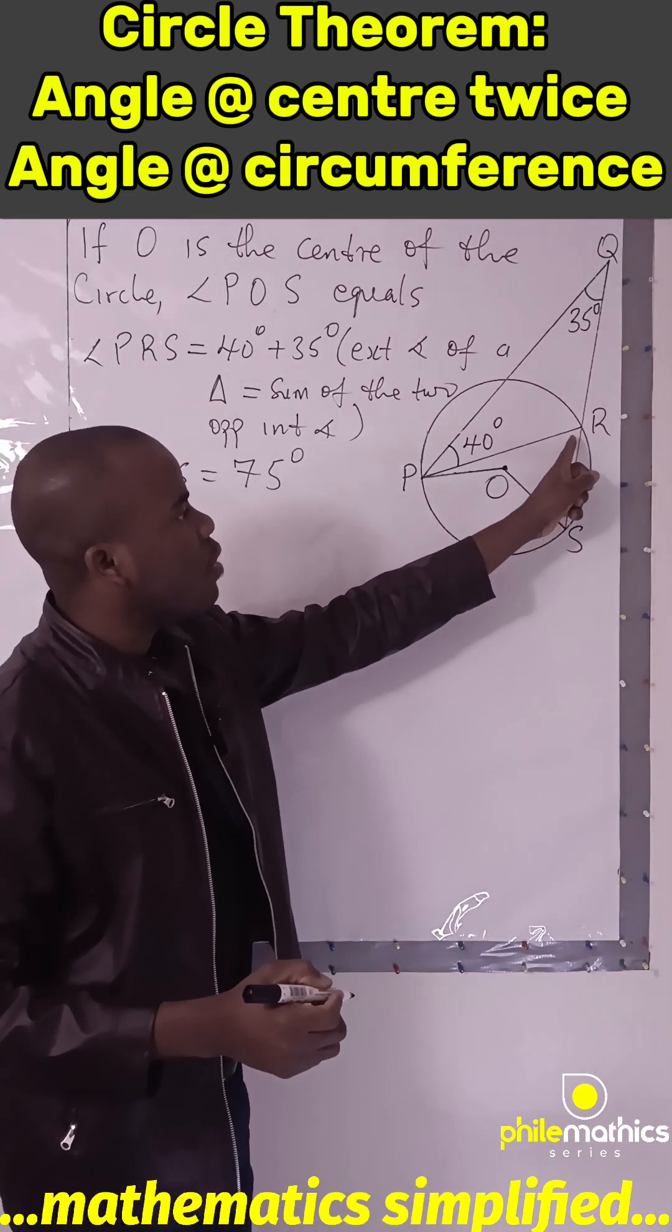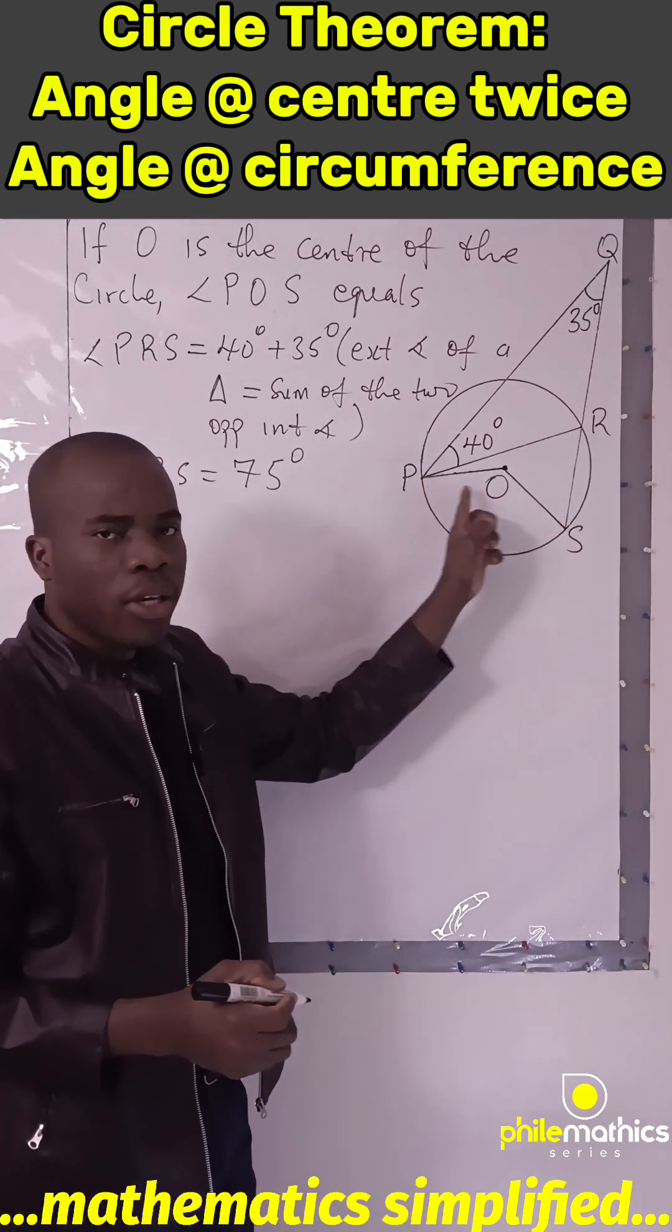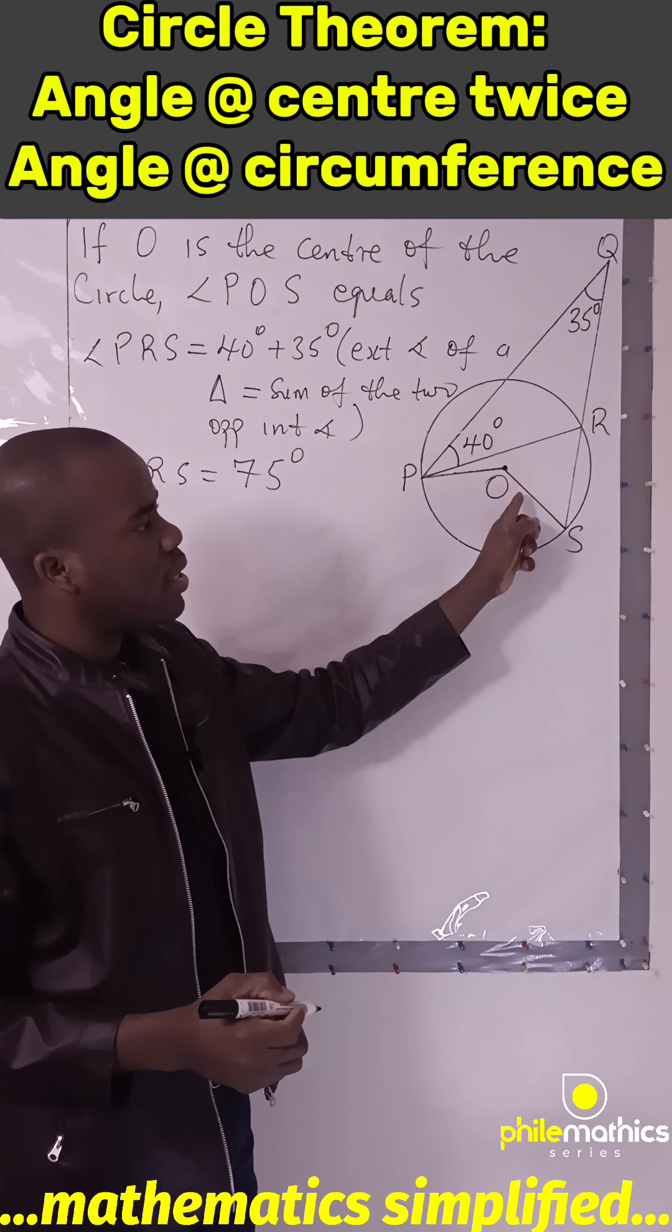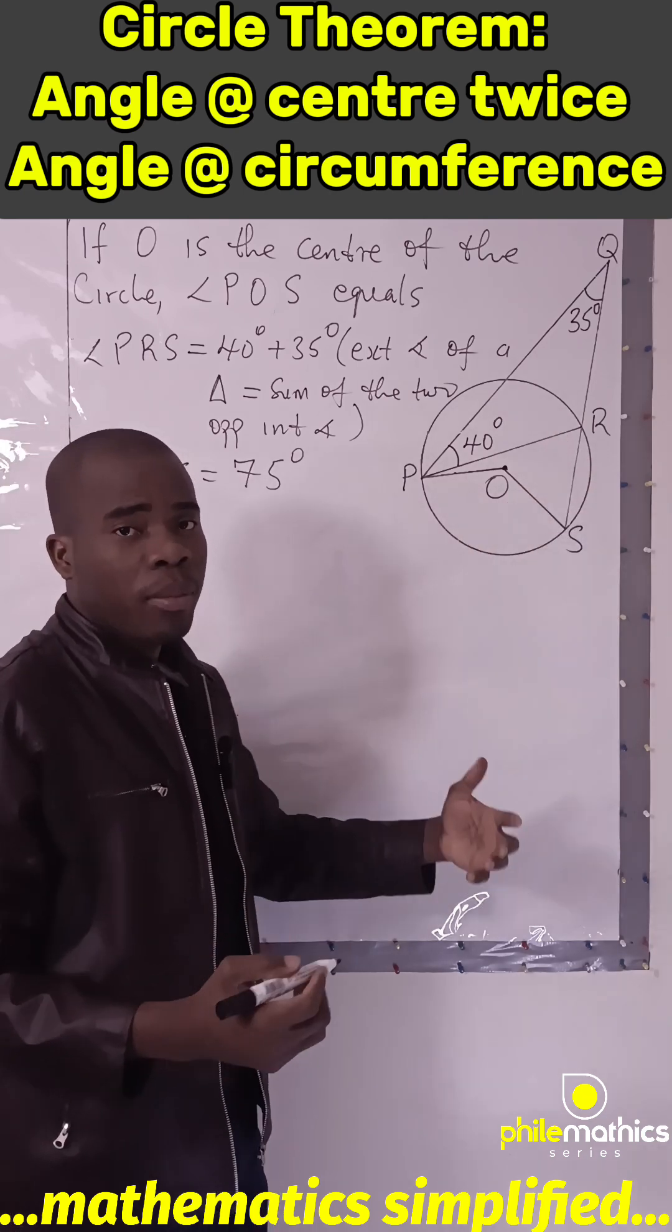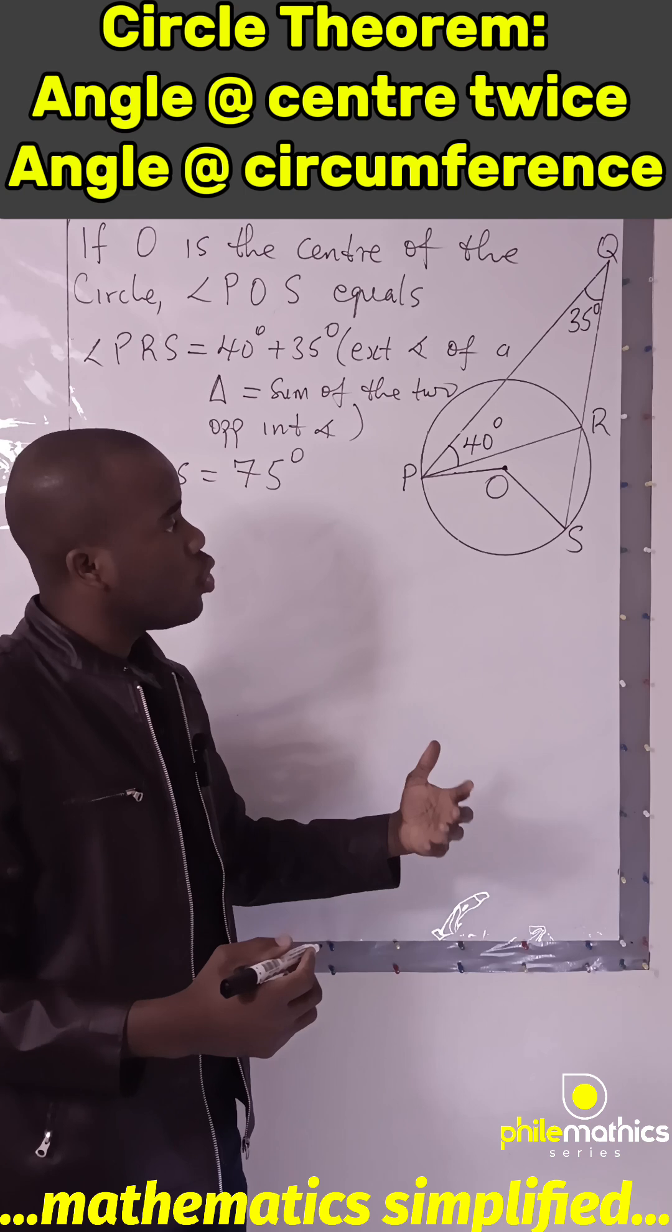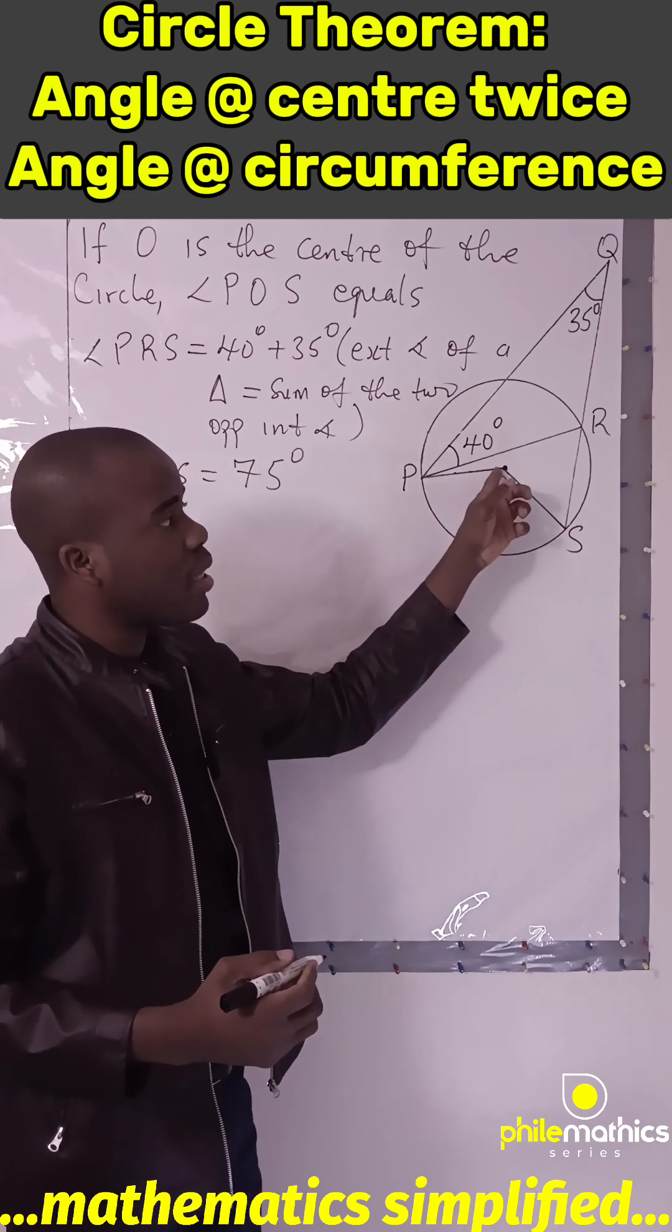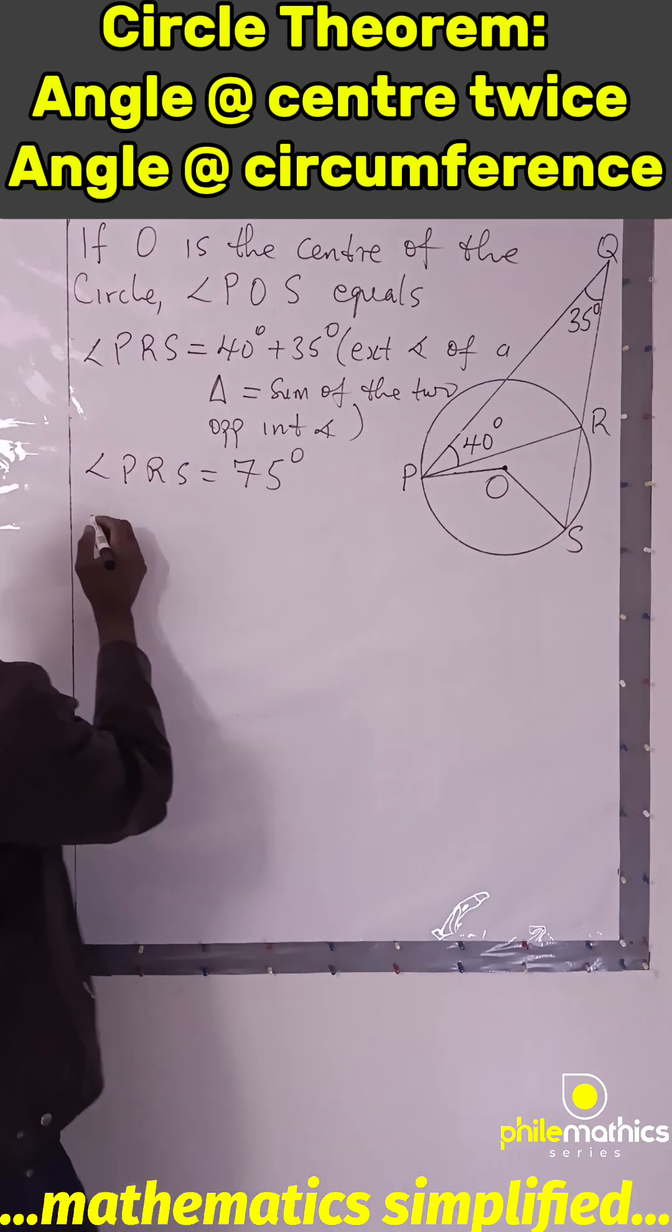And now, since angle PRX is 75 degrees, how should I get POS? POS is simply twice this angle because there's another theorem in circle geometry that says angle at center is twice angle at circumference. Therefore,